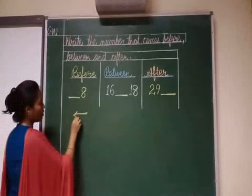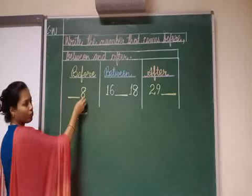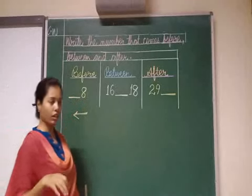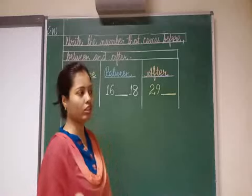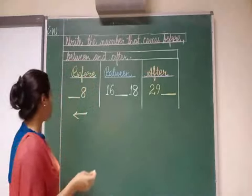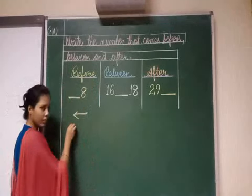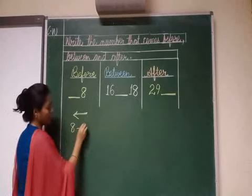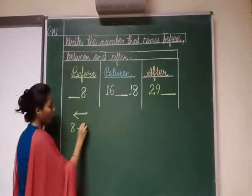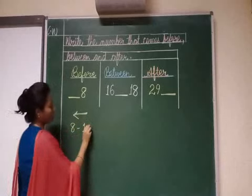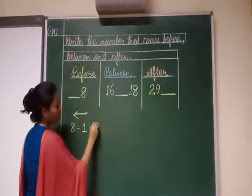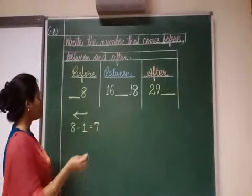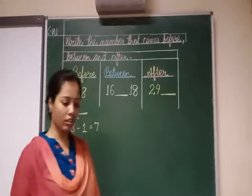You have to find out the number that comes before 8. If you have to find out the number, it will be a lengthy process. You need to count backward. In this process, you will find number 7. That's why you will put number 7 in the blank.